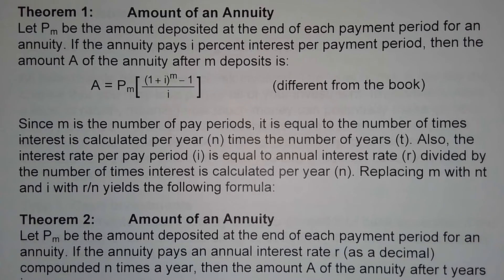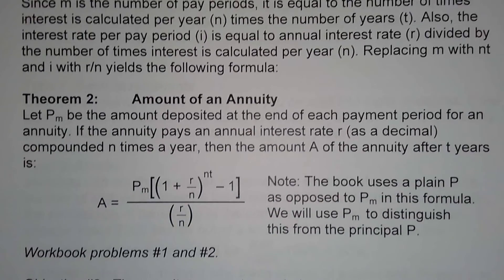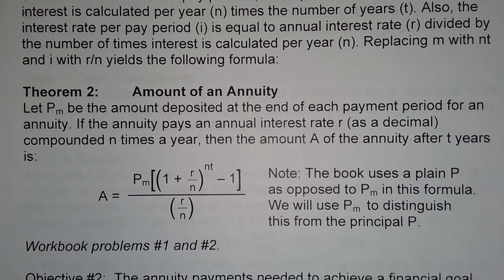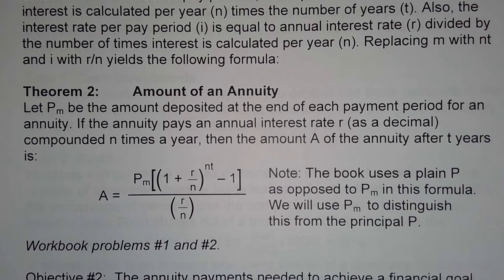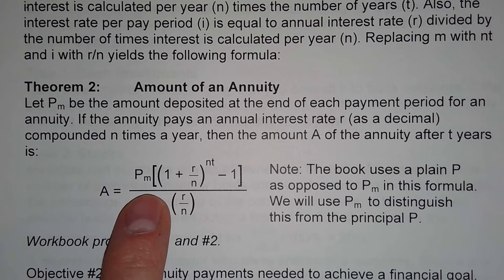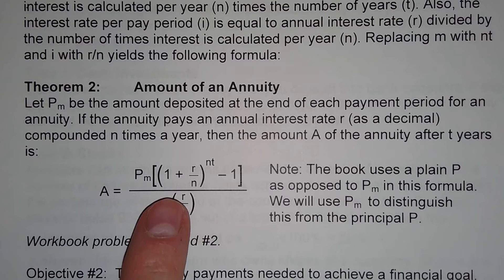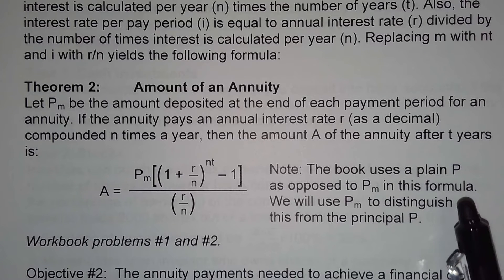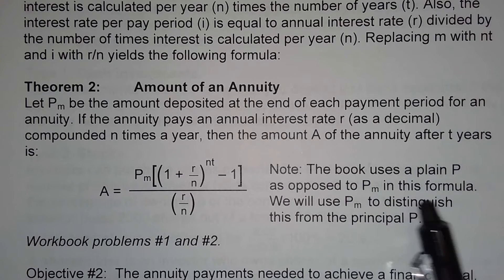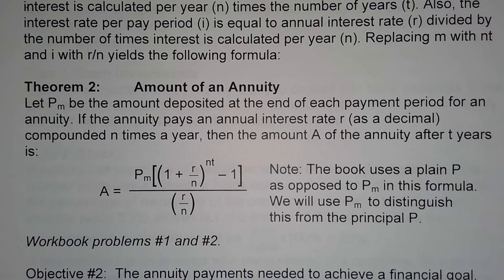Replacing m with nt and replacing i with r over n gives the following formula: let p sub n be the amount deposited at the end of each payment period. If the annuity pays an annual interest rate r as a decimal compounded n times a year, the amount A of the annuity after t years is: A equals p sub n times the quantity [(1 plus r over n) raised to the nt, minus 1], all divided by r over n. Note the book uses a plain p rather than p sub n; we use p sub n to distinguish it from the principal.